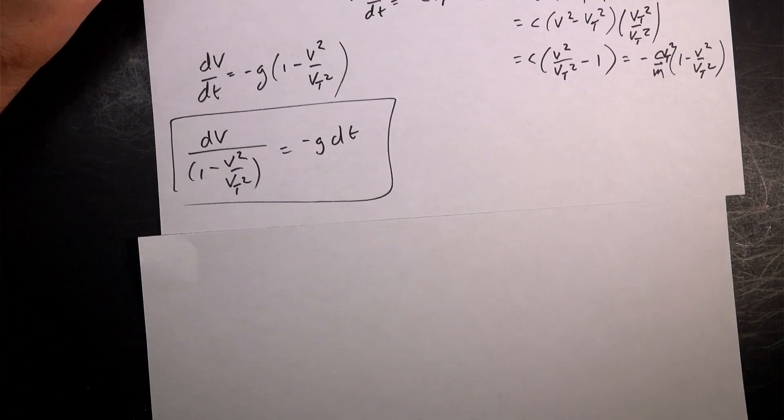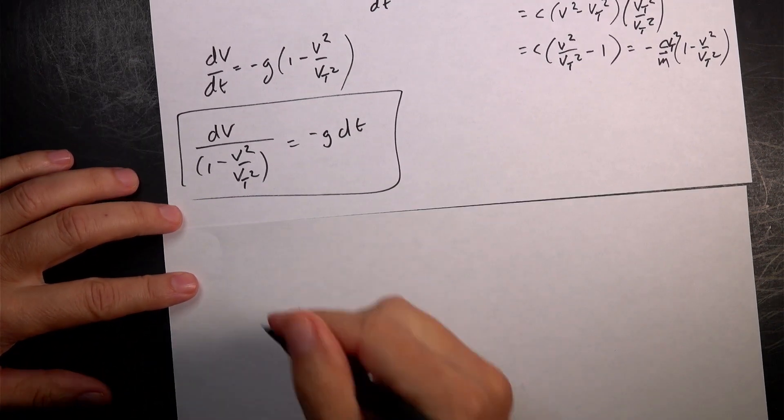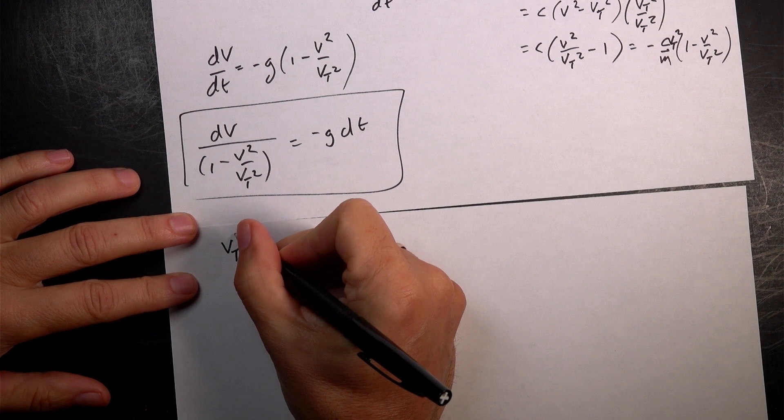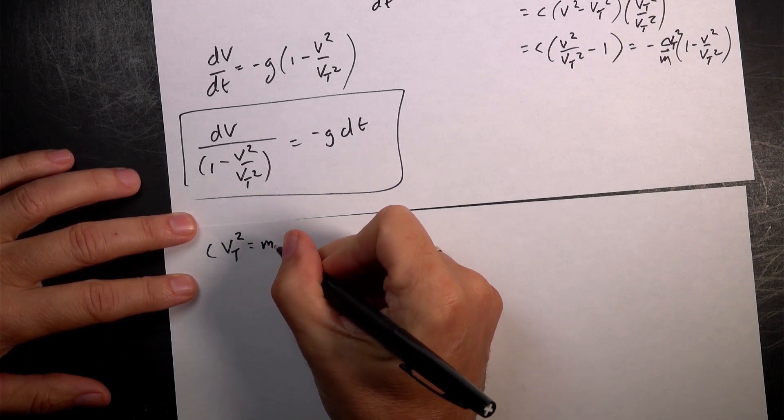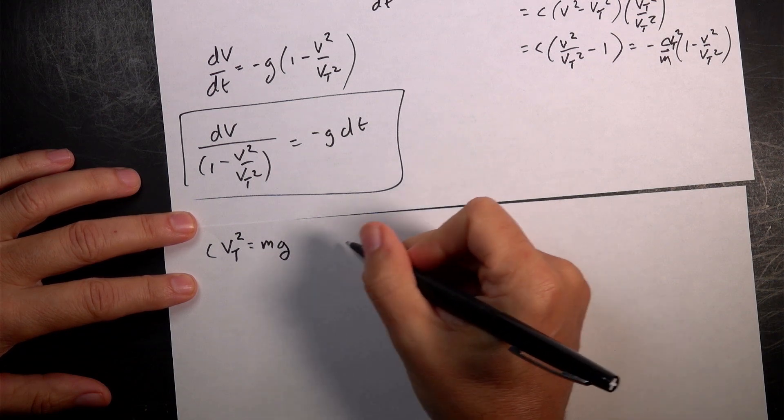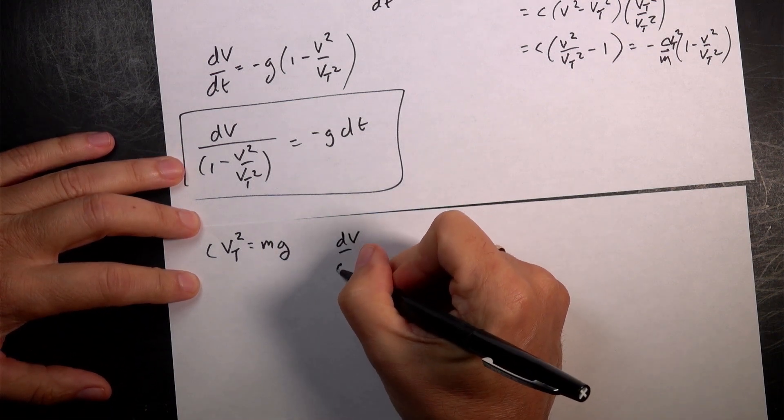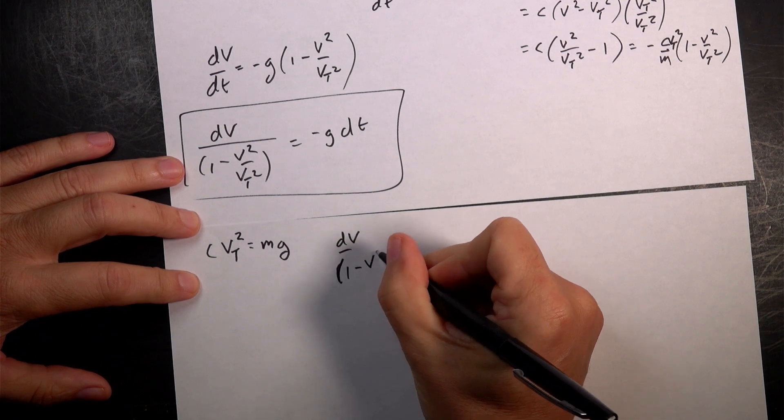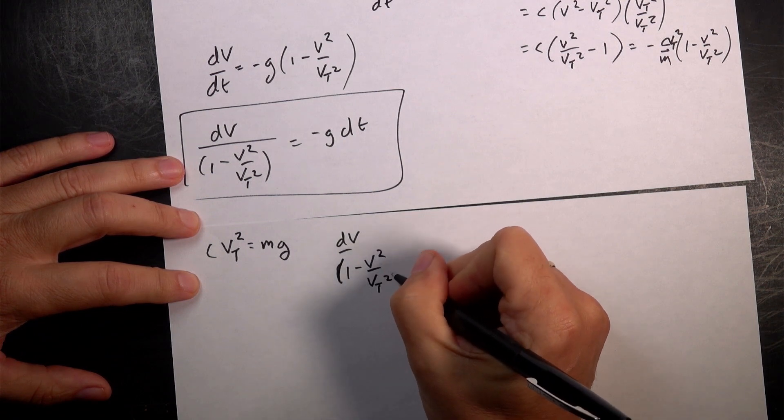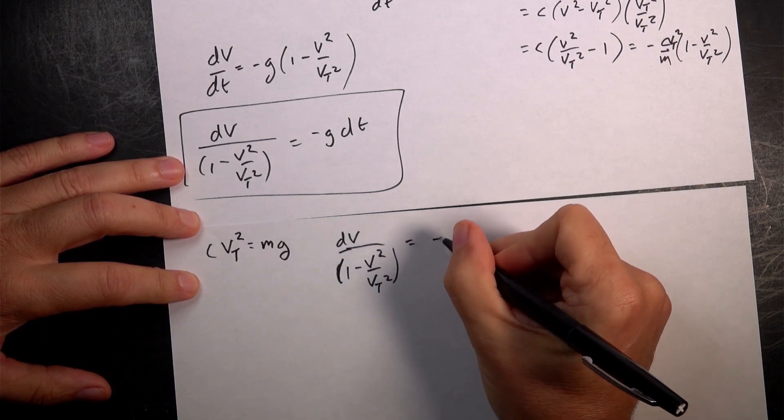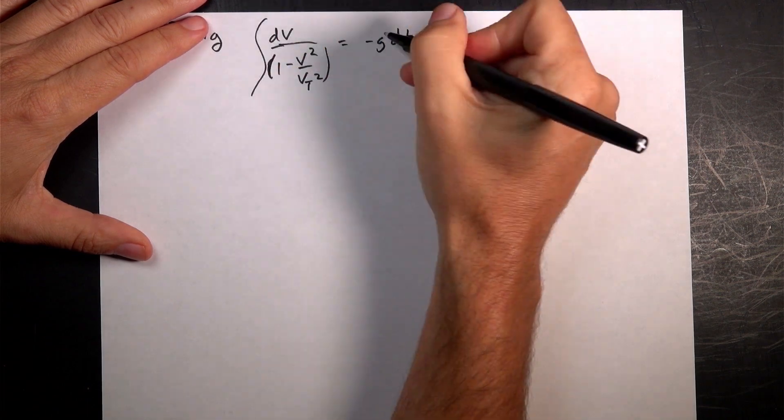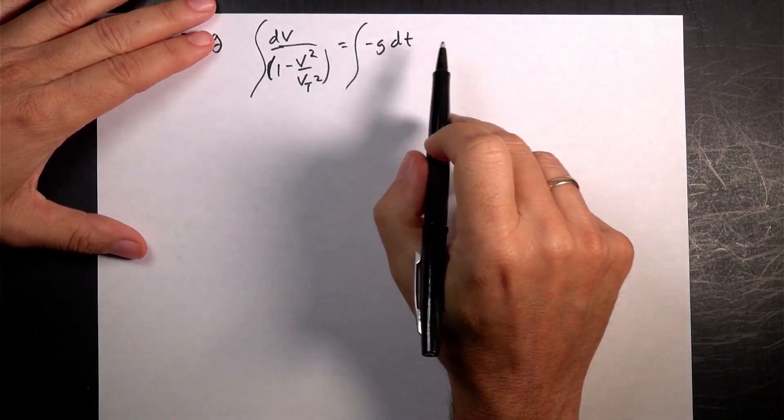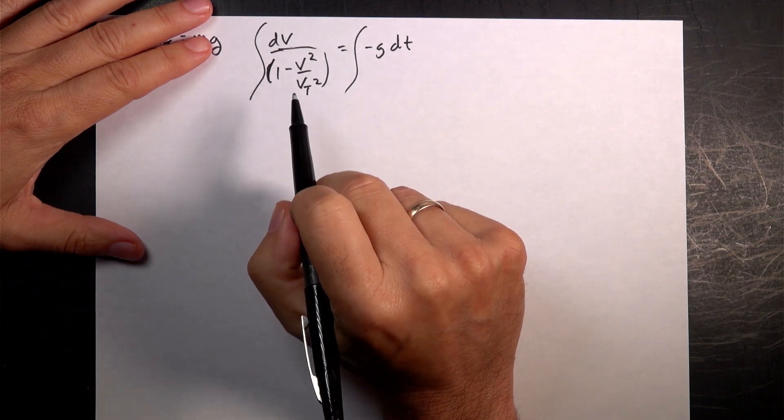So let's just rewrite that because that's where we're at right now. I'm going to put up here vt squared, cvt squared equals mg because that's important. It'll come up later. And then I'm dv over 1 minus v squared over vt squared equals negative g dt. Okay, so how do I integrate that? I want to integrate both sides, indefinite integral, I'll get a constant. That side is easy. This side, not easy.